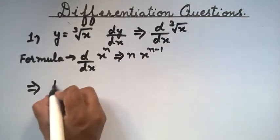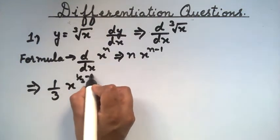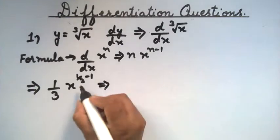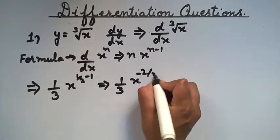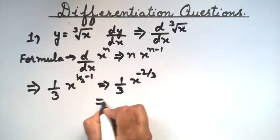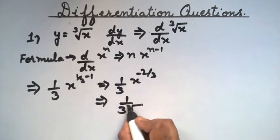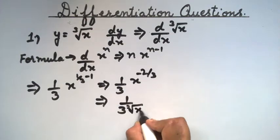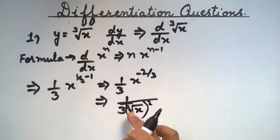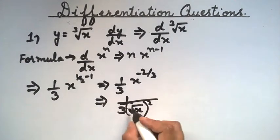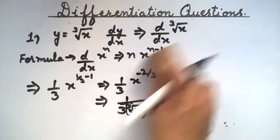Here, dy/dx = (1/3) x raised to the power (1/3 − 1), that is 1/3 times x raised to the power −2/3, which can also be written as 1 divided by 3 times the cube root of x squared. This is the answer to this problem.